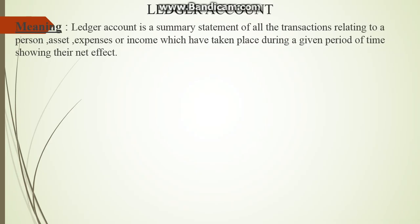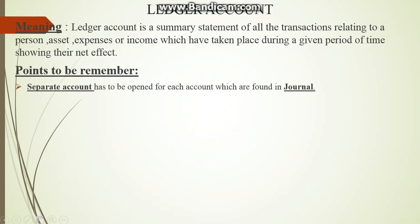Here are a few points we need to remember. The first one: a separate account has to be opened for each account found in the Journal. I am going to consider the Journal as a base to prepare my Ledger Account. In the Journal we pass entries according to transactions, and from that we find out how many personal accounts, nominal accounts, and real accounts we need to prepare. So to prepare my Ledger, I consider the Journal as my base and prepare separate accounts accordingly.